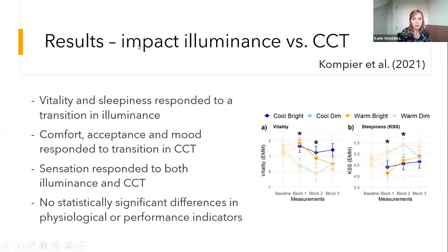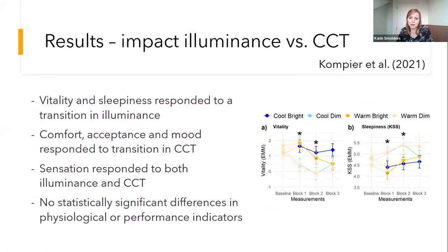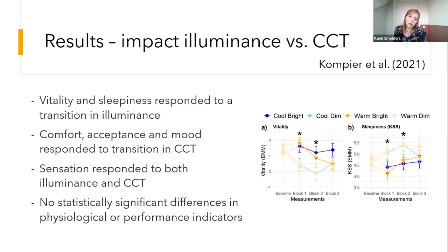Looking at the results, vitality and sleepiness responded to a transition in illuminance — feelings of vitality were higher and sleepiness lower when participants were exposed to bright versus dim light. When looking at visual comfort, acceptance, and mood, we saw mainly modulations as a function of CCT, the correlated color temperature. Visual sensation responded to both illuminance and CCT, and we didn't see any significant differences in physiological or performance indicators employed in the current study.